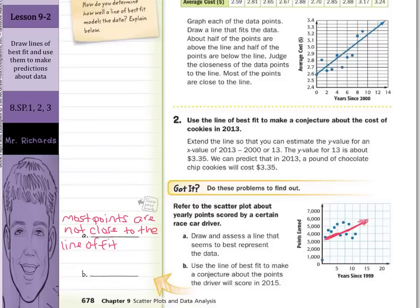But use the line of fit to make a conjecture about the points scored in 2015. Well these are years since 1999. And so if I take 2015 minus 1999, I get 16. I'm going to be looking for a point here where it's 16 years since 1999. And if I continue drawing this line out, where does this cross at 16? I would say about a little short of 6,000. So I would say about 5,900.